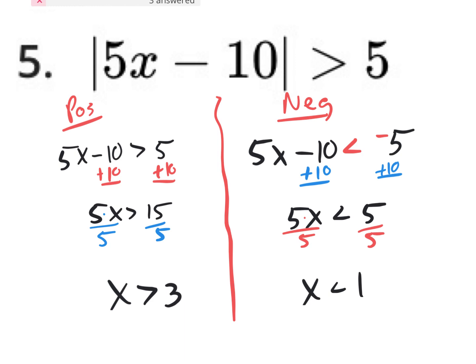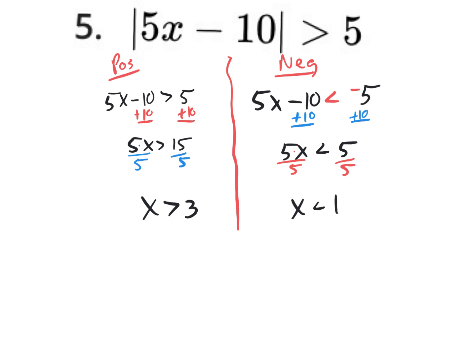On every absolute value inequality, you get two answers and need to graph them to see whether to write them together as a compound inequality with x in the middle, or separately with the word 'or'. If the areas are together, write them together. If the areas are apart, keep them apart with the word 'or'. Since we started with a greater than symbol, you should already know the areas will be apart.